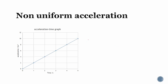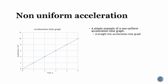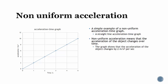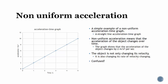Now let's move on to non-uniform acceleration. As a simple example, we use a straight-line acceleration-time graph — it can be more complicated like a curve, but we keep it simple. A straight-line acceleration-time graph represents non-uniform acceleration, which means the acceleration of the object changes over time. The graph shows the acceleration changing by 2 meters per second squared per second. The object is not only changing its velocity but also changing its rate of velocity change.